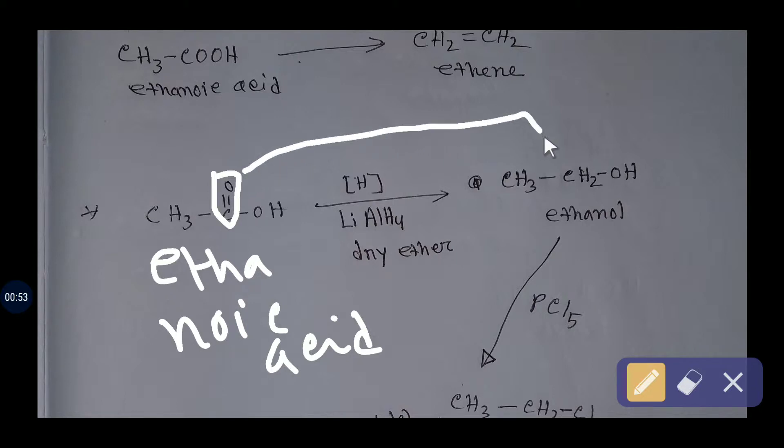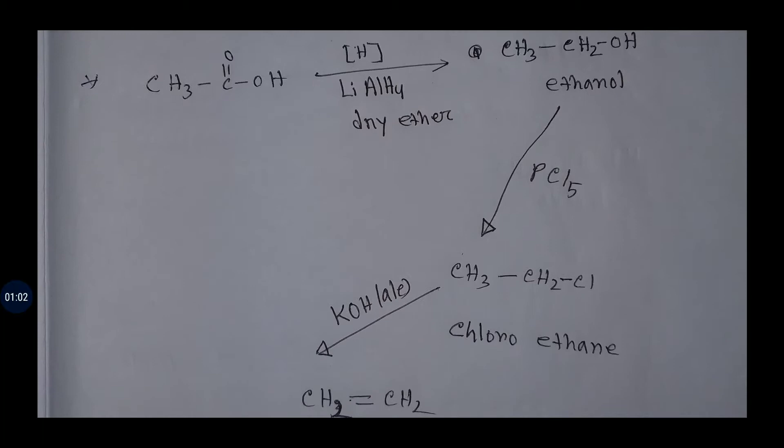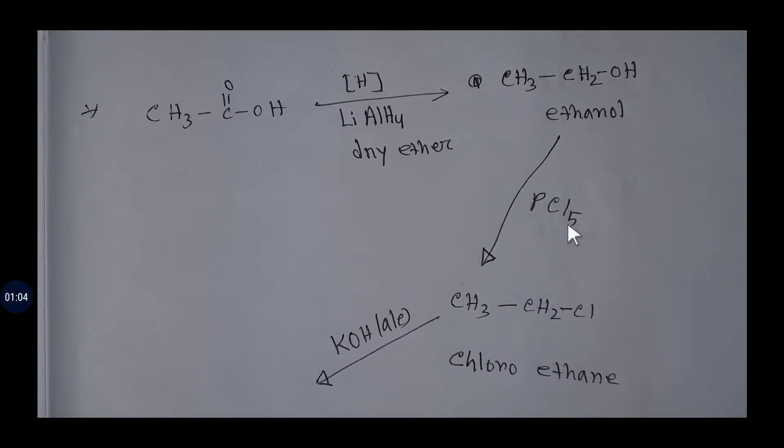That is, you are getting ethanol which is alcohol. If you add phosphorus pentachloride to ethanol, then